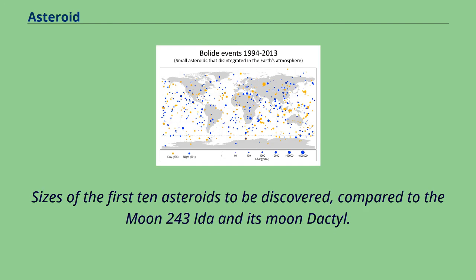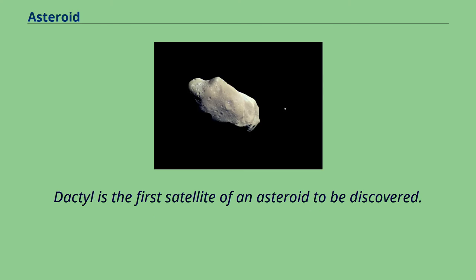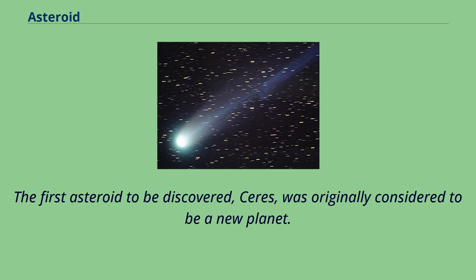Sizes of the first 10 asteroids to be discovered compared to the moon. 243 Ida and its moon Dactyl — Dactyl is the first satellite of an asteroid to be discovered. The first asteroid to be discovered, Ceres, was originally considered to be a new planet.